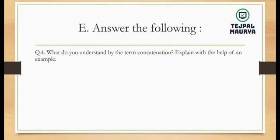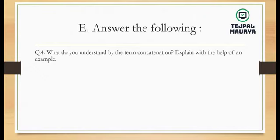Next question: what do you understand by the term concatenation? Explain with the help of an example. Concatenation means joining the data of two cells — combining them together without any space. That is called concatenation.